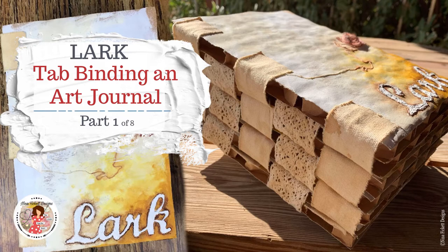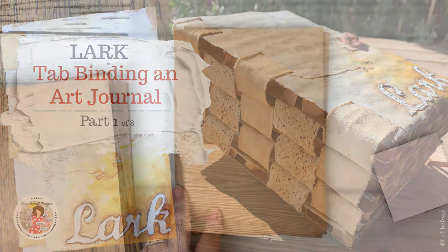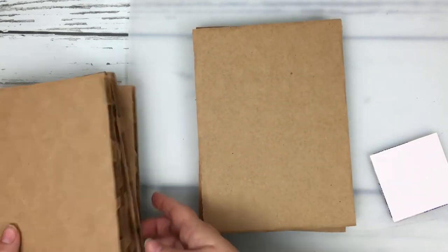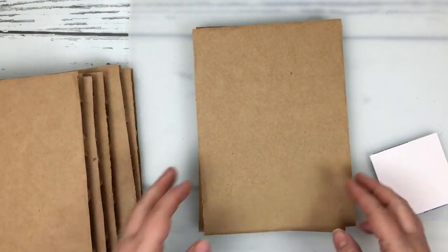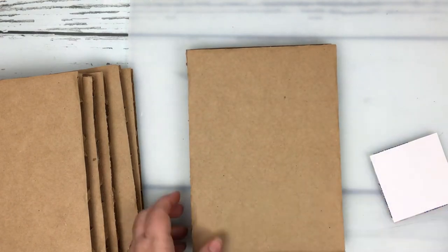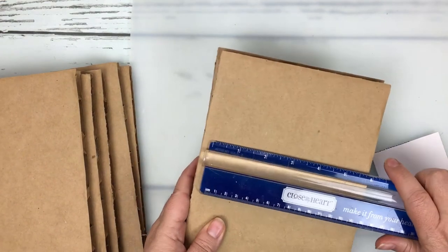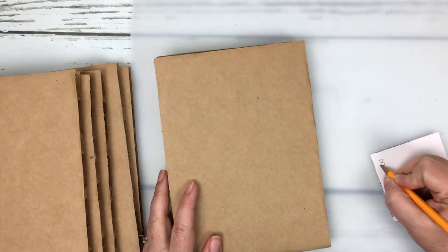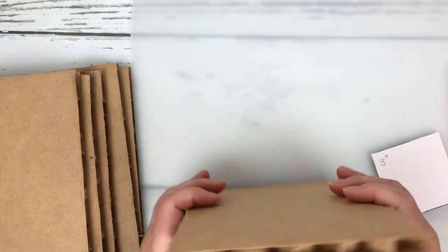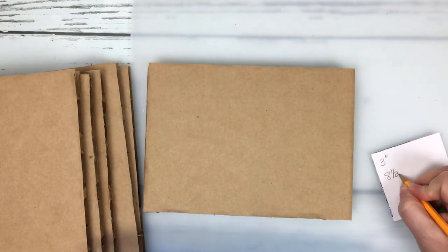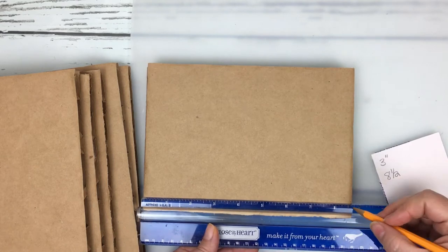Welcome back into the studio. Today I am going to start showing you a new series on tab binding. You're going to see these are very chunky pieces of cardboard and I discovered through others this method of binding called tab binding. The first thing you're going to need to do is measure the size of your pages.